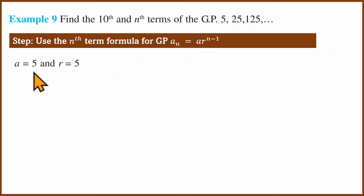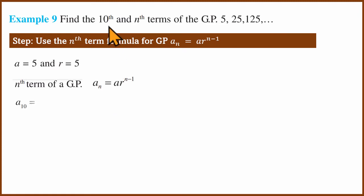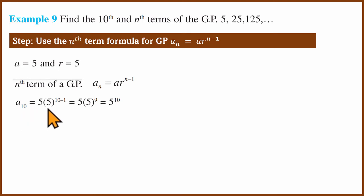First, we will find the value of a and the common ratio — the first term and common ratio. Then we will find the nth term formula. Next, we will find the tenth term using this equation.